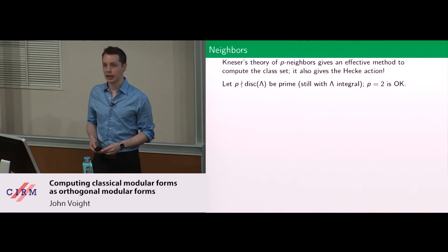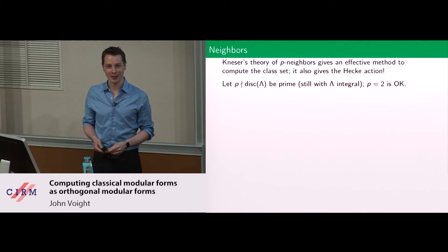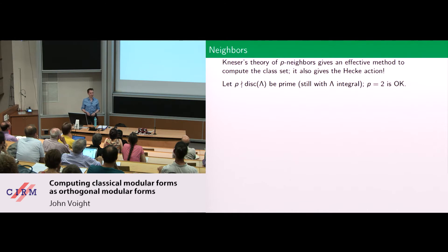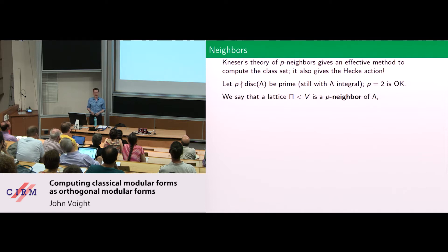I choose a prime p that doesn't divide the discriminant of my lattice. I still ask that lambda be integral. And yes, it's OK to take p equal to 2 — I know that makes everybody nervous to have a quadratic space with p equal to 2, but at least for this slide it's OK. We also compute T_2. We say a lattice pi is a p-neighbor of lambda — written pi ~_p lambda — if I take lambda, intersect it with pi, and the index of that intersection is exactly p in both cases.